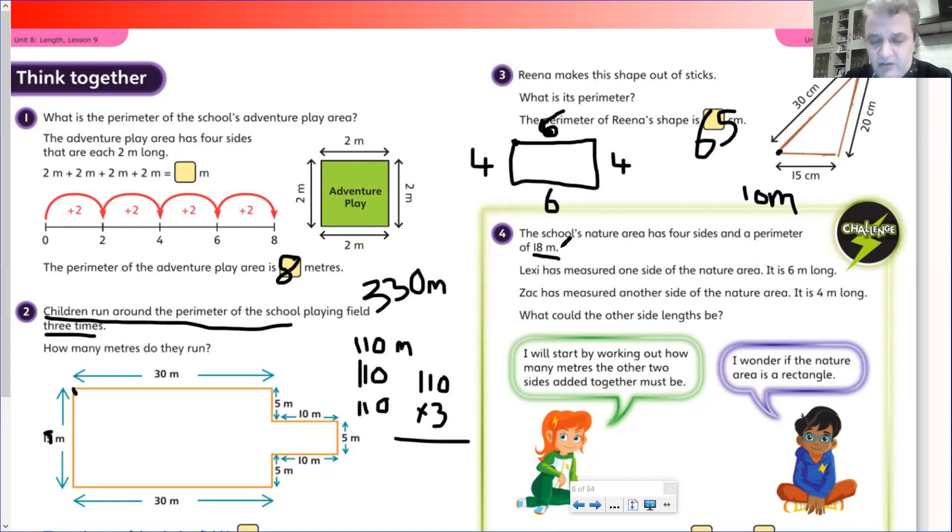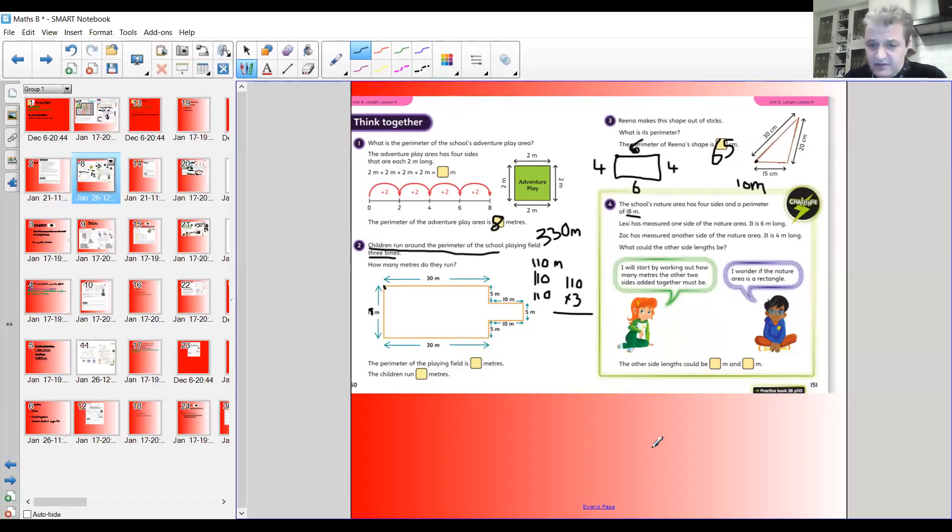There's loads of different quadrilaterals. It could be 6 and 4, and then we could have 5 and 3. 6 and 4 is 10, 5 and 3 is 8. So it can be a range of different—not a rectangle, but a lot of different measurements. That quadrilateral can have a lot of different measurements. We're not 100% sure what shape it is. The information they've given us doesn't really give us enough information. The other side lengths could be 4 and 4, they could be 2 and 6, they could be 7 and 1. So they could be a range of different answers. You can put your own answer in there.